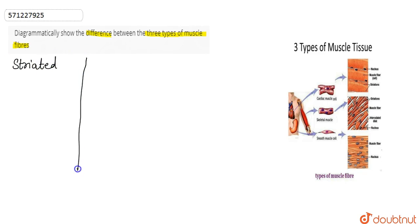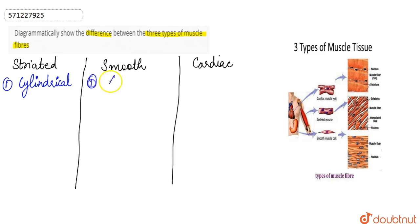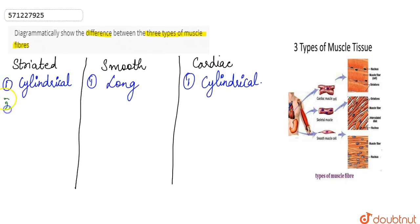We have striated muscles, next are the unstriated or smooth muscles, and the third are the cardiac muscles. Looking at slight differences in their structure: striated muscles are cylindrical, smooth muscles are elongated, whereas cardiac muscles are also cylindrical in shape.